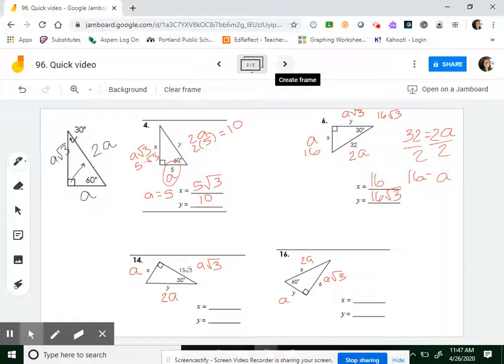Number 14. This time they gave me 15 root 3, so A root 3 equals 15 root 3. This one is a little weird, but we can do it. To solve for A, A root 3 means A times root 3. The opposite of times is divide. So A equals 15. That means X is 15, and Y is 2 times 15, which is 30. So far, they really aren't that bad.